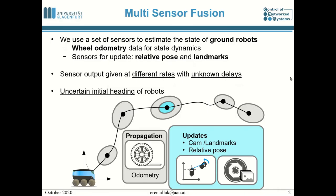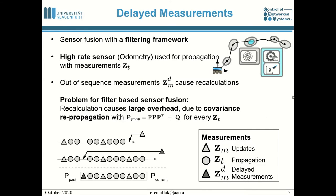We work in the field of multisensor fusion where we try to estimate the state of ground robots. We use wheel odometry for the state dynamics and we use relative pose and landmarks for system updates. The sensor output is given at different rates with unknown delays, and the robots have uncertain initial headings. We do sensor fusion with a filtering framework, and we also have a high-rate sensor for the odometry which we use for propagation, generating many measurements Z_T.